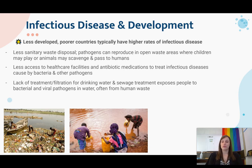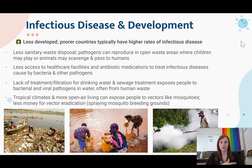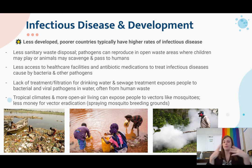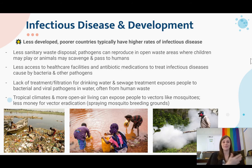There's also a lack of treatment or filtration for drinking water and sewage treatment, exposing people to bacterial and viral pathogens in water often coming from human waste — septic waste going directly into water sources or animal waste that can't be treated or filtered. In tropical climates and more open-air living, people are more exposed to vectors like mosquitoes, and there's less money for vector eradication, such as spraying mosquito breeding grounds with insecticides. If you're outside more because it's hot, there will be more mosquitoes and you're at greater risk.